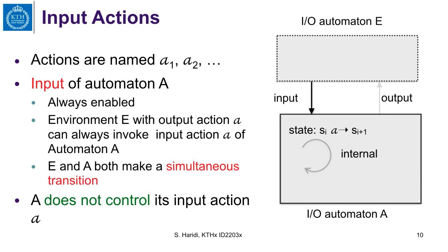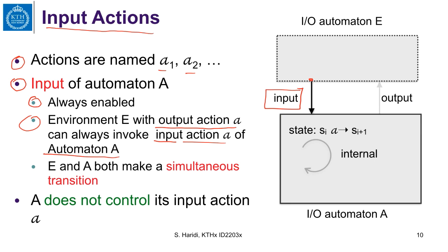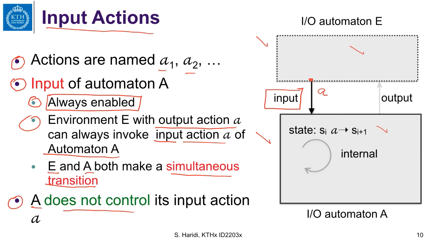Focusing on input actions: actions are named — A1, A2, and so on — coming from a set. We have a set of input actions, a set of output actions, and a set of internal actions. An important property of input actions is that they are always enabled. An output action of the environment can always invoke an input action of automaton A. The environment and the automaton both make simultaneous transitions, each changing their own state. Since input actions are always enabled, the automaton A does not control its input actions.